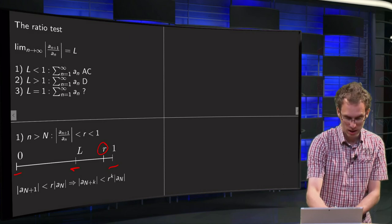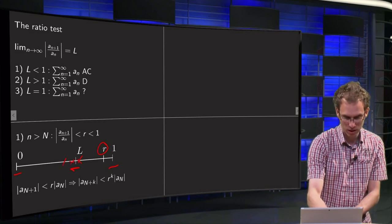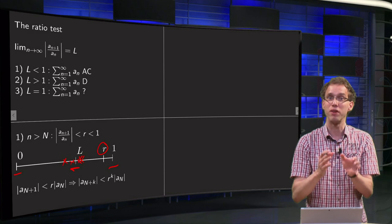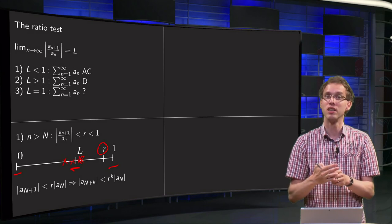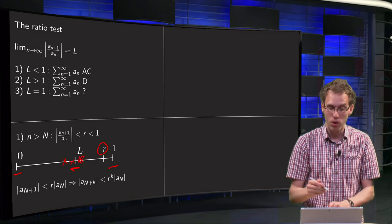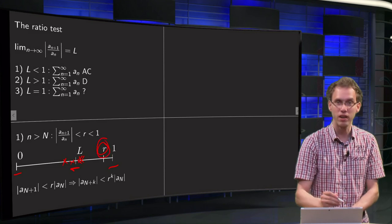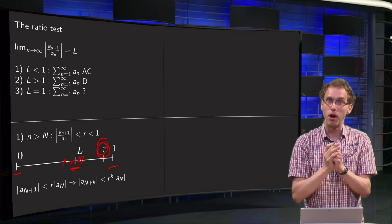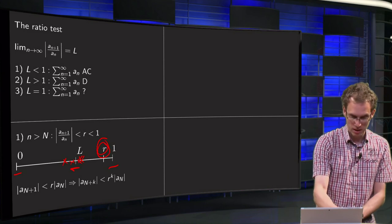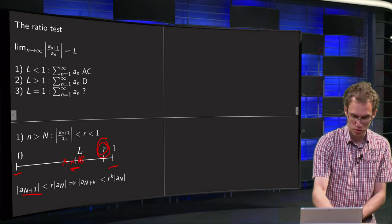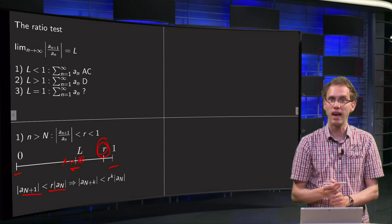Provided you are small enough. In particular, if you are far enough in your series, they will all be below also this value r over here, close to L and below your r. So you know, if you are far enough, that a_{m+1} is smaller than r times a_n.